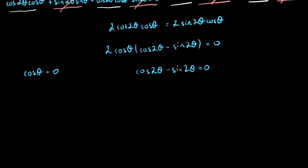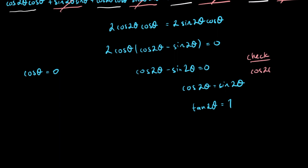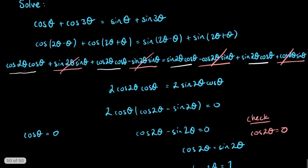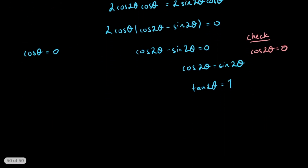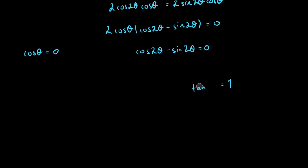We have to do a little bit more work with that expression. For example, we could write cos(2θ) equals sin(2θ) and then divide by cos(2θ), which gives us tan(2θ) equals 1 — which is fine. But we have to check that cos(2θ) equals 0 is not a solution to the original equation, which is not immediately obvious to me, so I would have to go ahead and check those solutions.